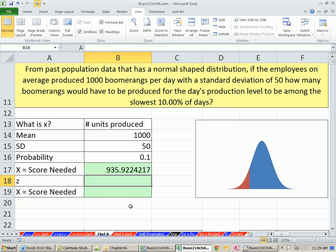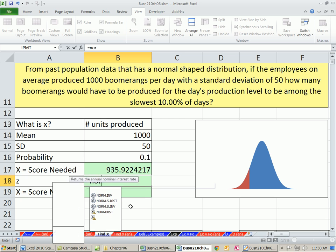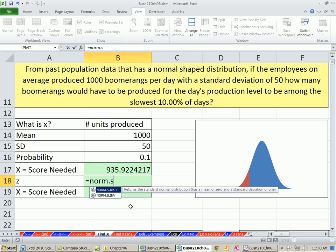To find Z, we use the standard normal function NORM.S.INV. We need the equal sign. It's the inverse function.